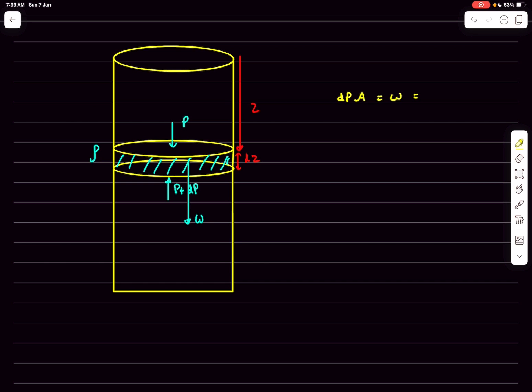Now we can also write the w in terms of the density, so that is going to be ρ times the volume, and the volume of the element is going to be dz multiplied by the area of cross section. So now we can cancel out the areas. I missed a g as well, so there is a g here. Basically what we end up with is dp/dz equal to ρg.